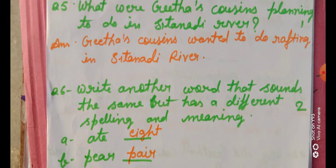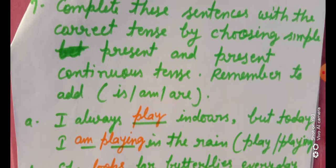Question number 6: Write another word that sounds the same but has a different spelling and meaning. In this question, you need to write a word with the same sound but different meaning and spelling. So: A) 'add' — the answer is 'eights' (A-D-D). B) 'pair' — the answer is 'pear' (P-E-A-R).